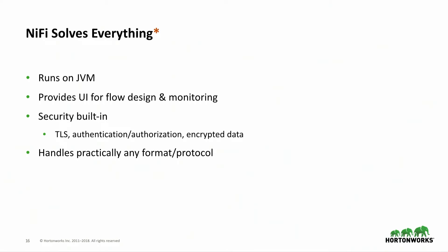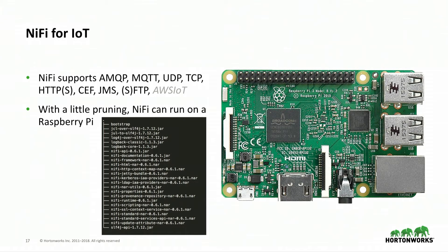NiFi runs on the JVM, which is widely available. It provides a user interface for flow design and monitoring — no hand-writing YAML. It has security built in: TLS, mutual authentication, multi-tenant authorization so multiple teams can run on the same NiFi instance, and we encrypt all data. It handles practically any format and protocol. However, NiFi on IoT is a challenge. In version 0.7 you could get it onto a Raspberry Pi — about 600 MB, starting up in 10–15 minutes. With the 1.x release it went to about 30 minutes.